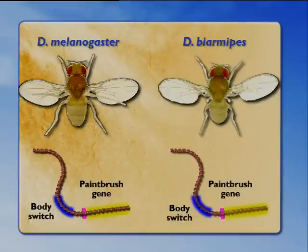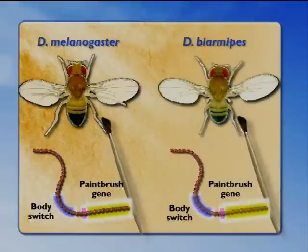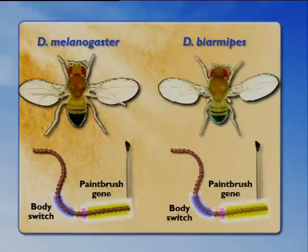Both animals' genomes contain these switches, and these switches govern the use of this paintbrush gene to fill in the color on the abdomen of the fruit fly.